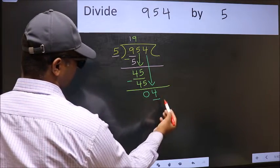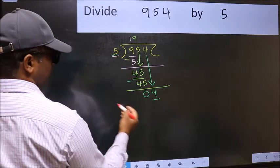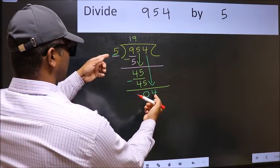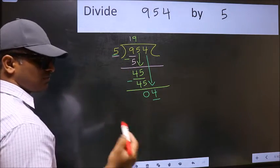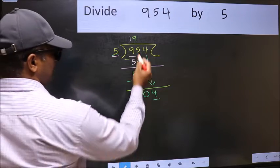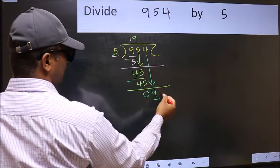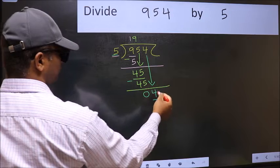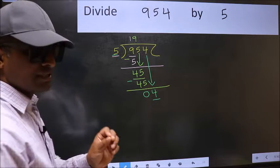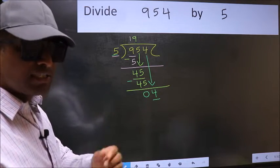Here we have 4 and here 5. 4 is smaller than 5. So what many do is they directly put dot and take 0. Which is wrong.